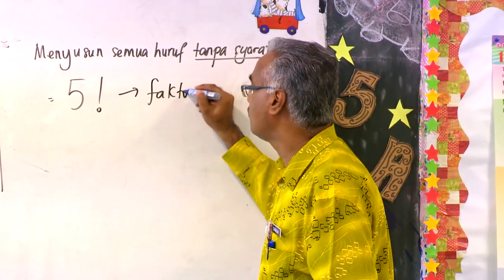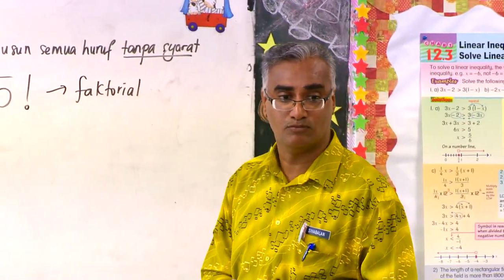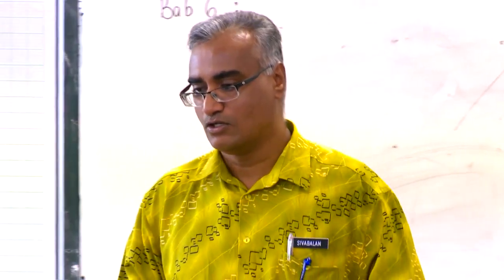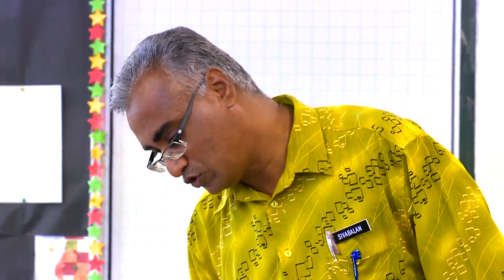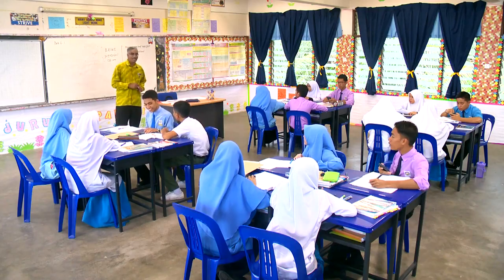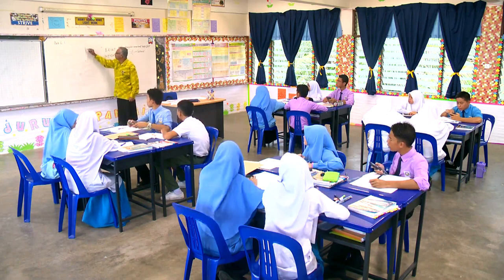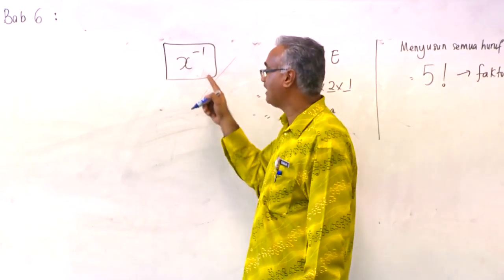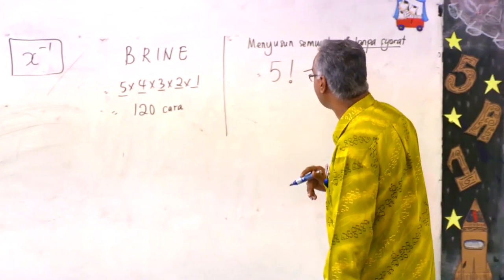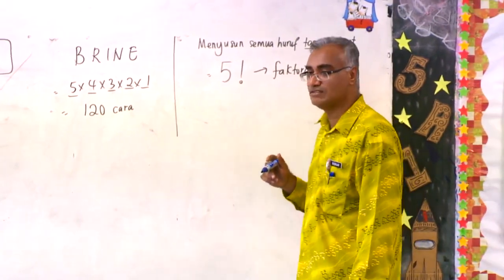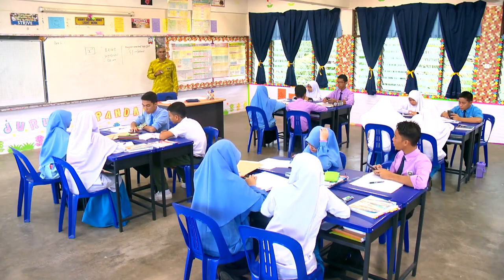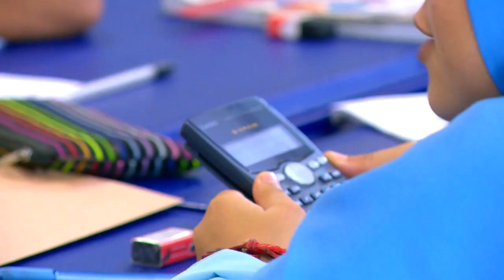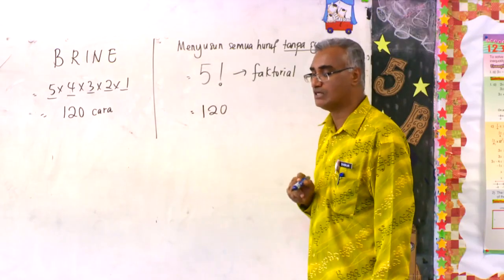5 faktorial. Ada di kalkulator kamu. Cuba lihat simbol faktorial di kalkulator kamu. Jumpa tak? Di mana? Shift X, simbol ini dipanggil X faktorial (X!). Cuba tekan kalkulator: 5 shift faktorial, sama dengan? 120. Sama kan?